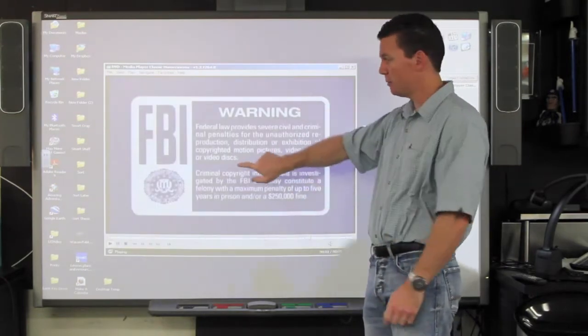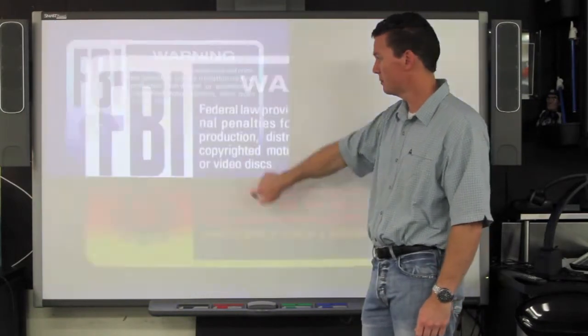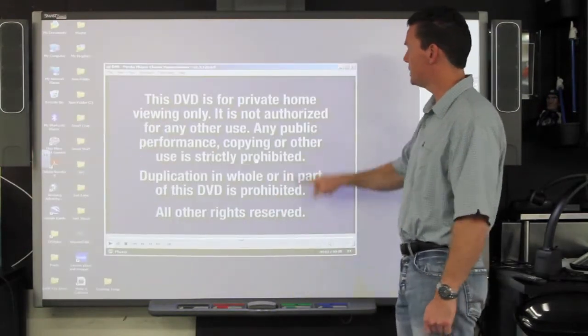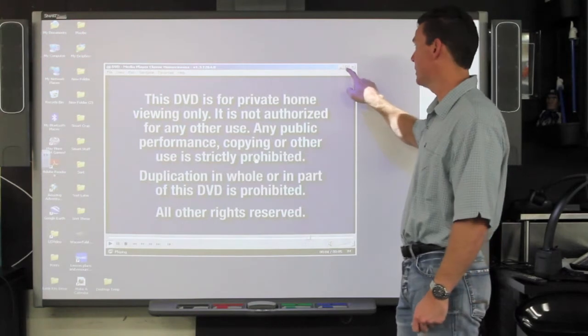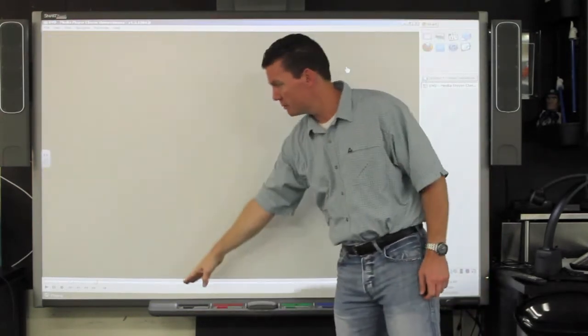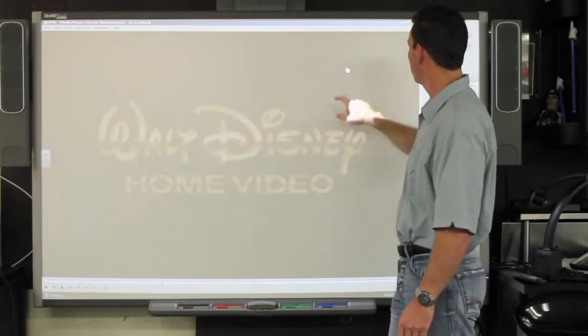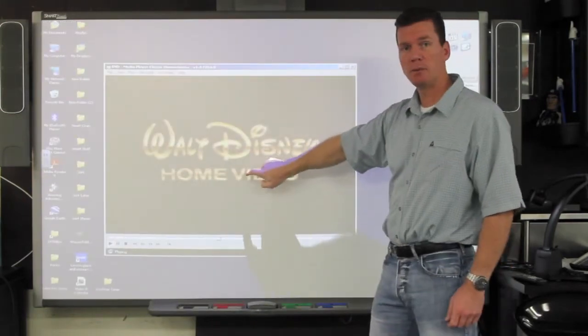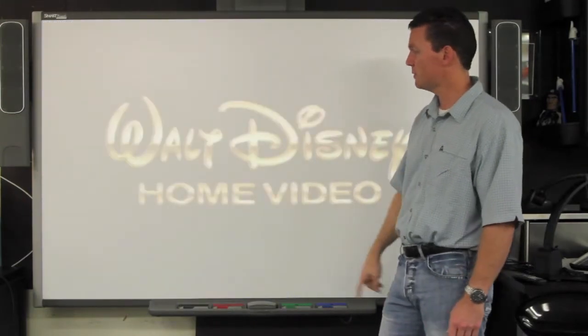Once you get to this screen you can double tap to go full screen and you do want to double tap. If you hit this little maximize button you'll notice that you're using up screen space with the blue bar. So don't do that. Just simply double click. That'll take you right into the video.